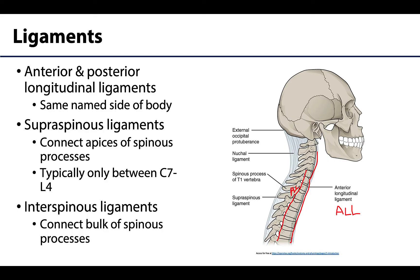Between the apices — the most posterior portions of the spinous processes — are the supraspinous ligaments, typically present between C7 and L4. They are cord-like and robust, and merge with the ligamentum nuchae, or nuchal ligament, which extends from the external occipital protuberance and bridges the gap between the relatively shorter spinous processes of the cervical region.